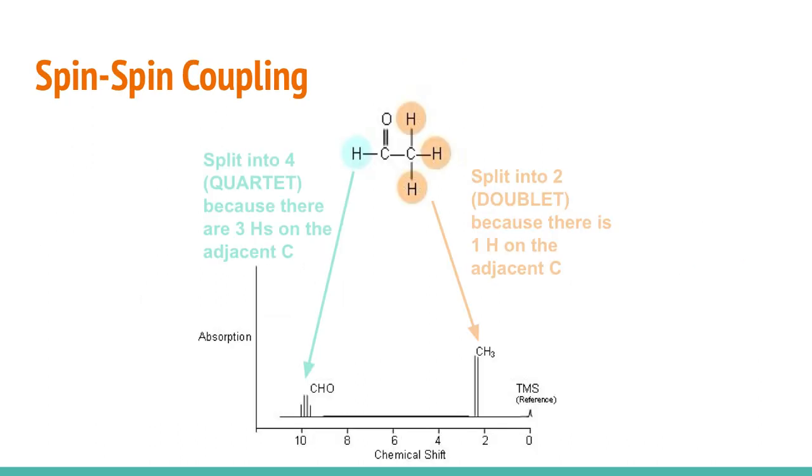Spin-spin coupling essentially is the splitting of single absorption peaks into what are called multiplets. So it could be a singlet, a doublet, a triplet, a quartet, depending on how many of those peaks that you see it split into. And the reason why it splits into these multiplets is due to the spin of one proton coupling with the spins of neighboring protons.